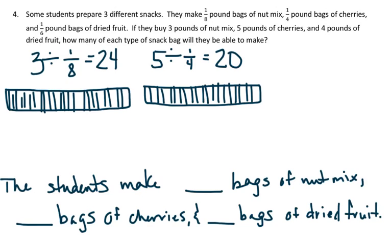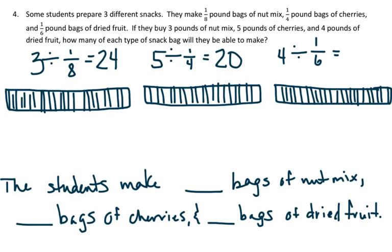And then the last one, I have 4 pounds of dried fruit. And I'm making 1/6 pound bags. So let's do a tape diagram for that. And I have my 4, and I'm going to divide each one by 6. And that will give me 24.